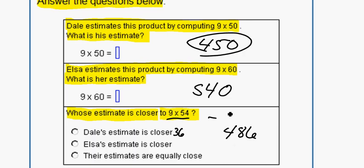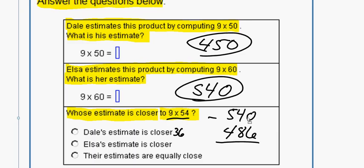Then we can check Elsa's answer of 540. So 540 minus 486 is, 10 minus 6 is 4, carry over, 13 minus 8 is 5, so it's a difference of 54.